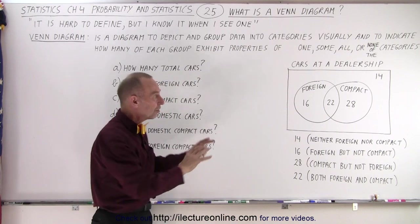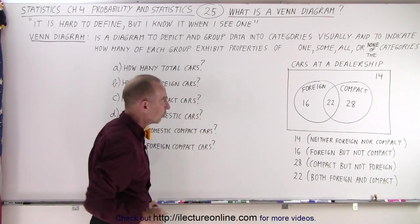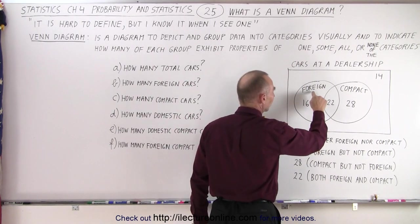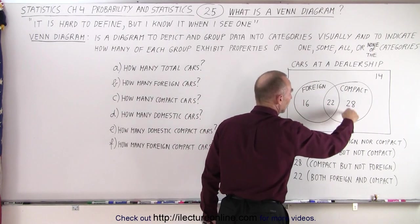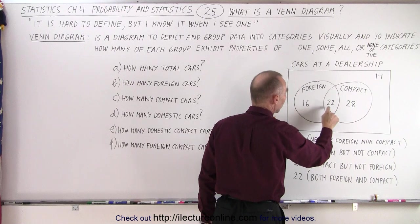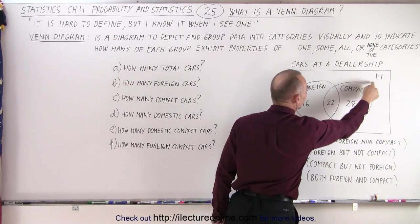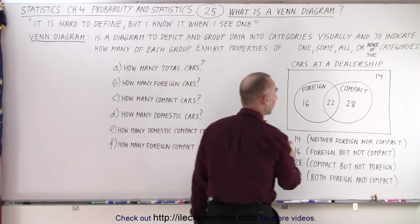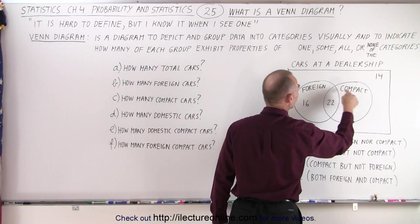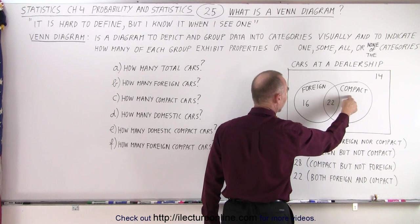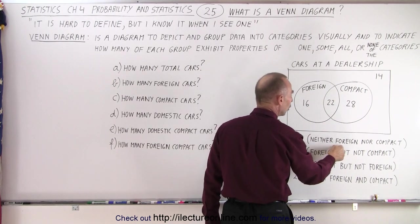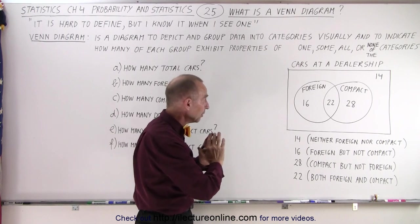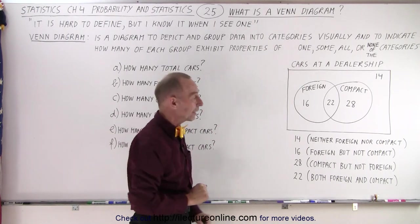Let's say that this depicts cars at a dealership. We have a circle that represents foreign cars and a circle that represents compact cars. We have four numbers: 16, 22, 28, and 14. The 14 represents cars that do not belong to either of these two categories — so neither foreign nor compact cars.